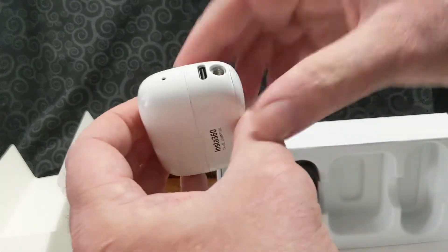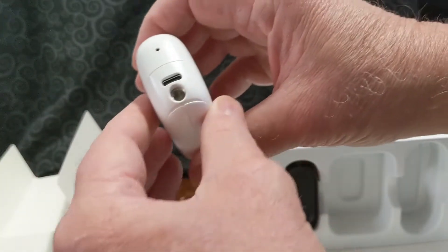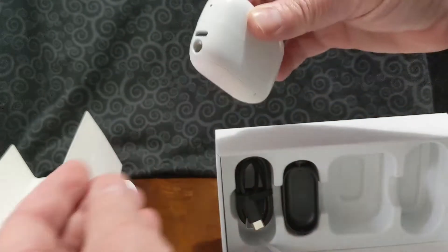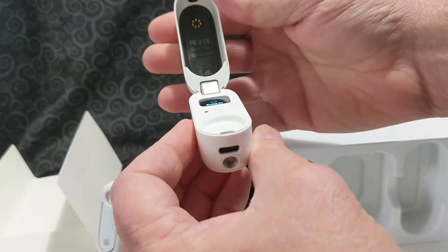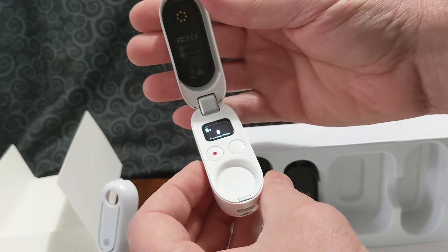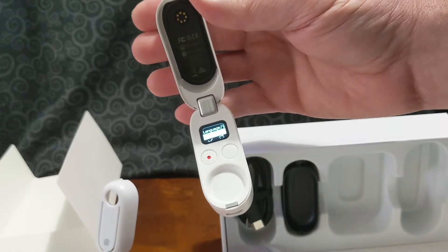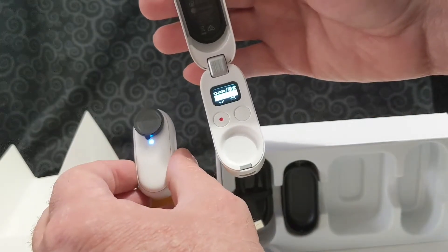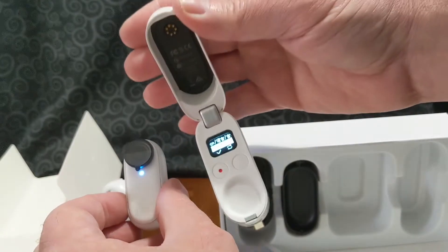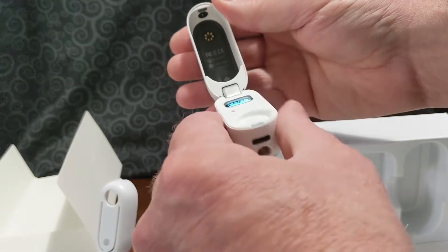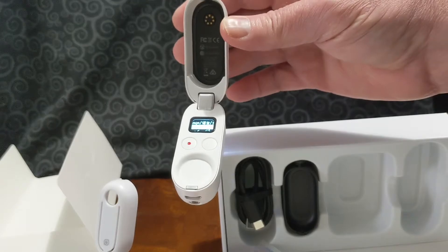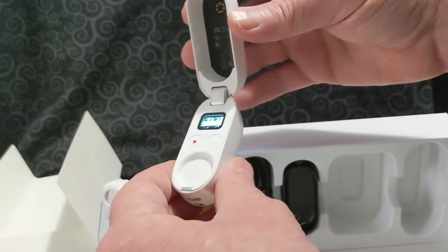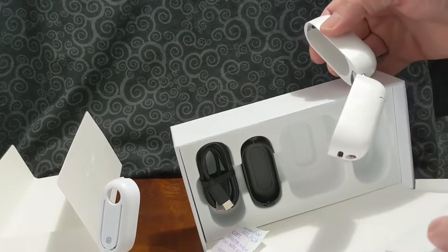And then we have the charging case that the connector would hook into. It's already charged up and everything. That connected just like that, just from opening it. Interesting. That's pretty cool. So anyway, that's the Insta 360 GO 2 box opening.